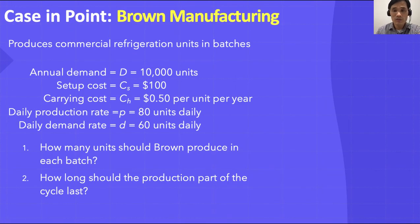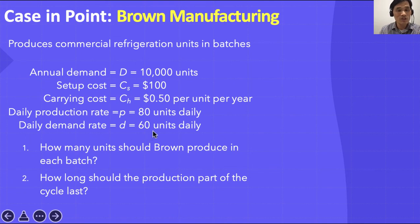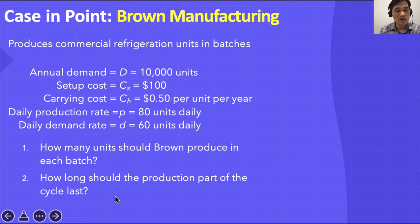Let's look at an example: Brown Manufacturing produces commercial refrigeration units in batches. Annual demand is 10,000 units, setup cost is $100, carrying cost is $0.50, daily production rate is 80 units per day, and daily demand rate is 60 units per day. Two questions: how many units should Brown produce in each batch, and how long should the production part of the cycle last?